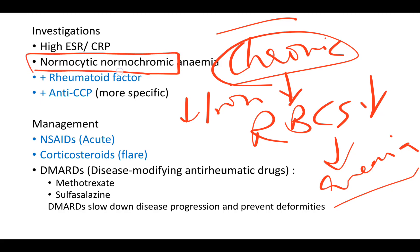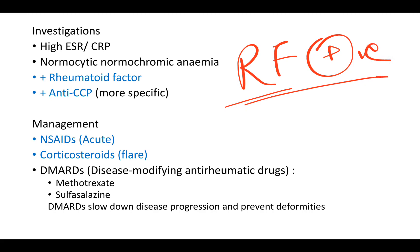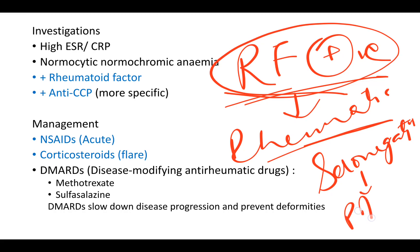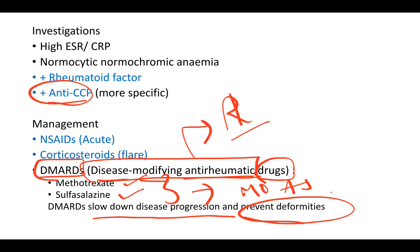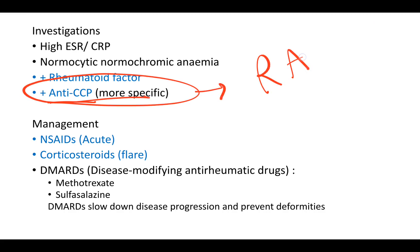The next best test is rheumatoid factor (RF), which is positive in almost all rheumatic conditions. Where RF is negative but the patient has rheumatic conditions, that is called seronegative arthritis, which includes the PAIR mnemonic — associated with HLA-B27. The most specific and most appropriate test for rheumatoid arthritis is anti-CCP (anti-cyclic citrullinated peptide), which is always positive in rheumatoid arthritis.